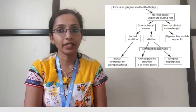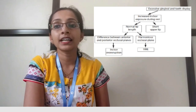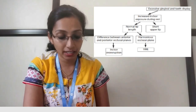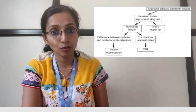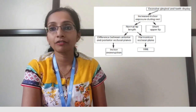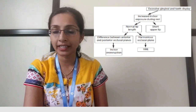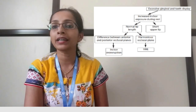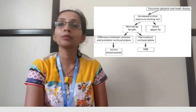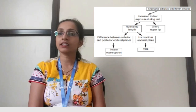If the incisor exposure at rest is increased and you also have a gummy smile, then the cause could be short upper lips, incorrect occlusal planes with incisor over-eruption, or vertical maxillary excess. This flowchart helps diagnose the cause of gummy smile in a particular case.